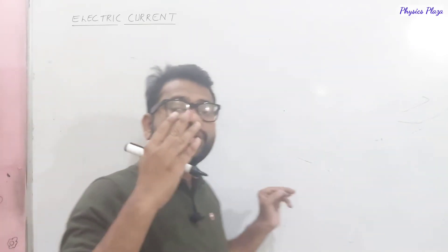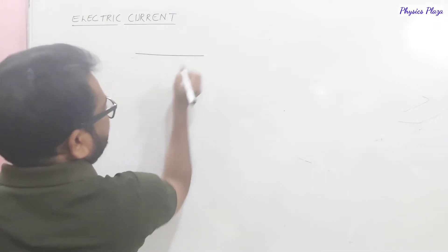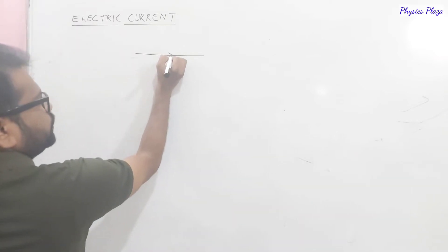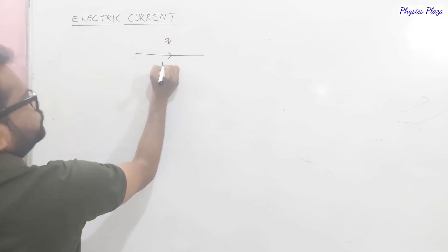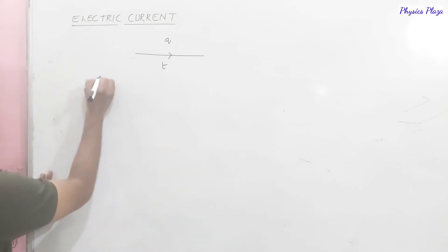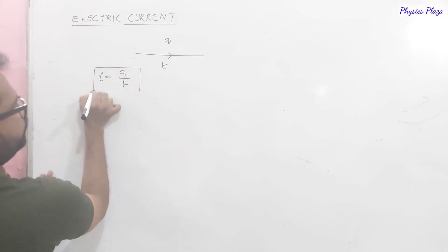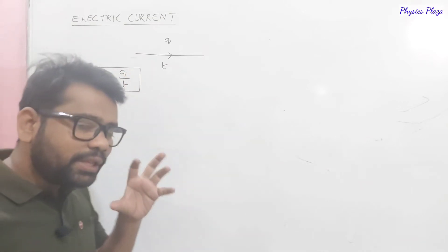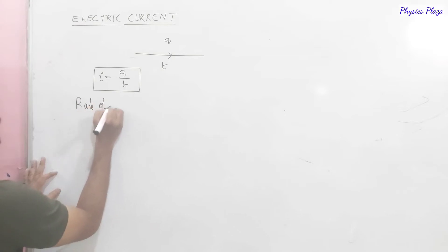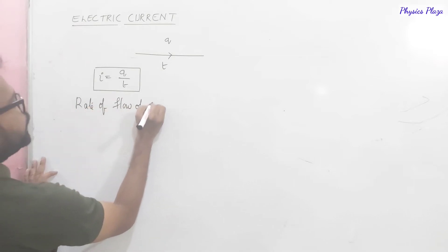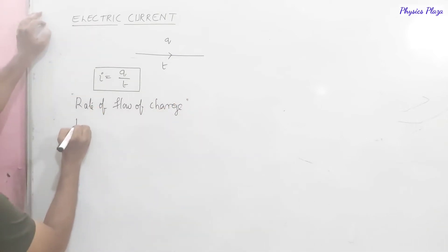The charges which are in motion constitute electric current. For example, if one electron with charge q flows through a wire in time t, then mathematically electric current I = q/t. The rate of flow of charge is called electric current.